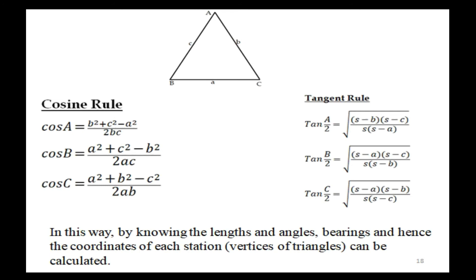Cosine rule: cos A = (B² + C² − A²) / 2BC. Cos B = (A² + C² − B²) / 2AC. Cos C = (A² + B² − C²) / 2AB.